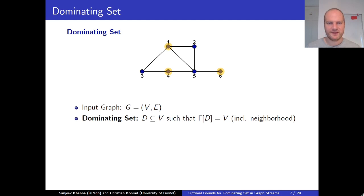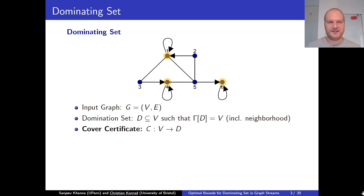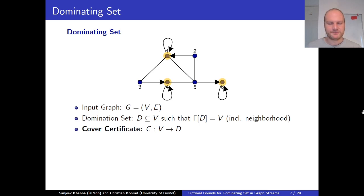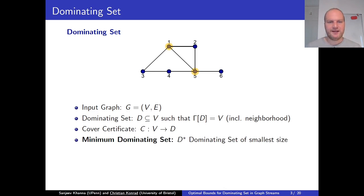We will also use the notion of a cover certificate. Our lower bounds will require that algorithms output a cover certificate. A cover certificate is essentially a mapping from the vertex set to the dominating set, indicating which vertex is dominated by which vertex from the dominating set. For example, vertex two here is dominated by vertex one, one is dominated by itself, three is dominated by four, four by itself, five is dominated by six or by four, and six is dominated by six.